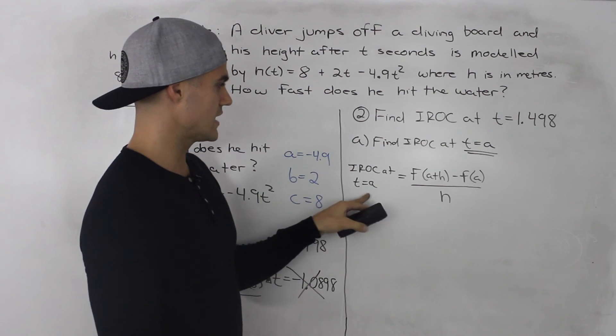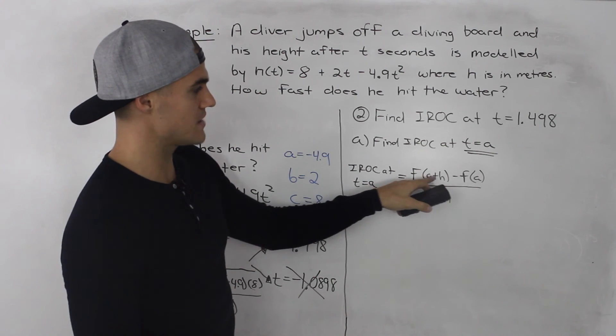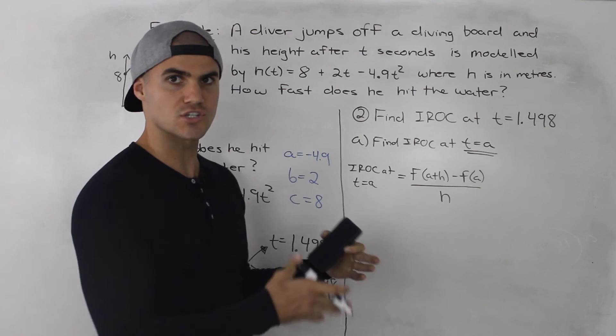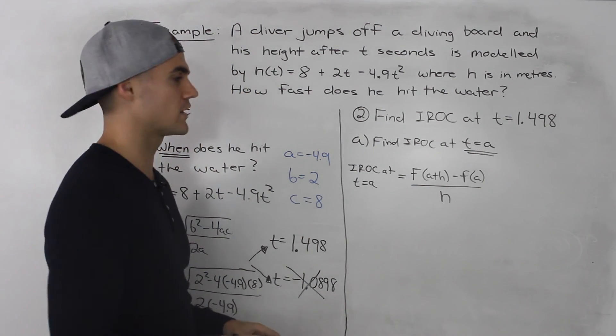So the instantaneous rate of change at t equals a is equal to this difference quotient of f(a + h) minus f(a) all over h, where h is going to be a very small number, as we discuss in the difference quotient videos.